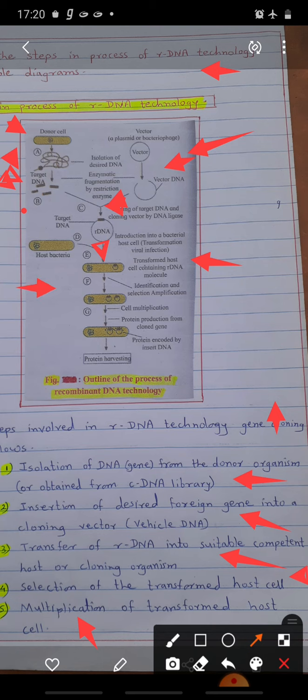Plasmid vector contains different marker genes, like mostly resistance genes, that is ampicillin resistance gene.